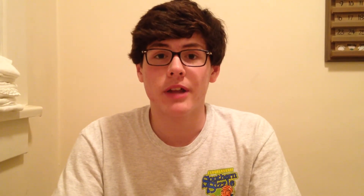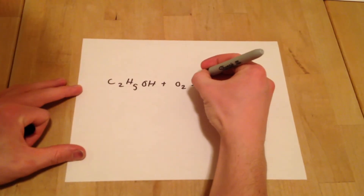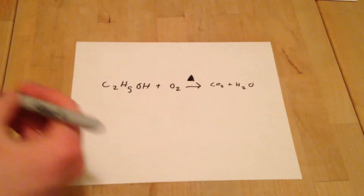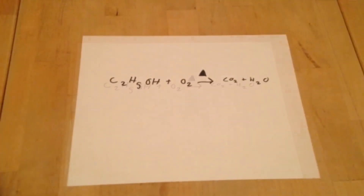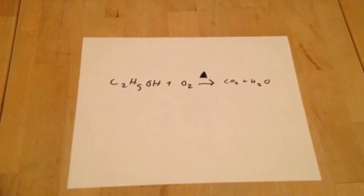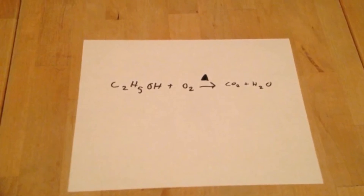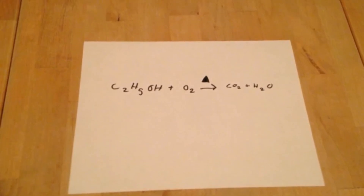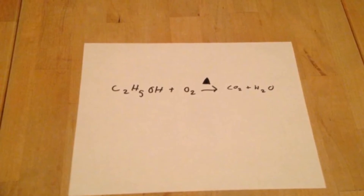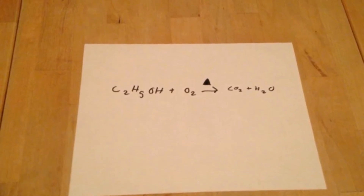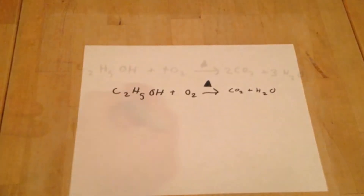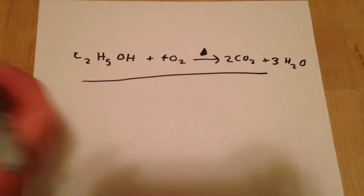The H2O, however, is always going to be water vapor because it is a combustion reaction. Above the yield arrow is a triangle. This triangle is called a delta. A delta indicates that heat is supplied to cause the reaction. Here is the balanced equation. Now let's get to the experiment.